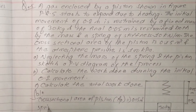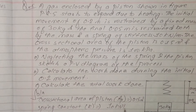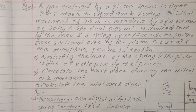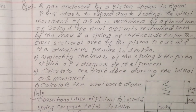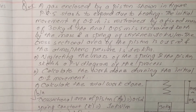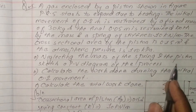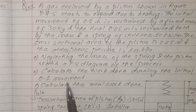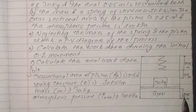Spring constant K = 10 kilo Newton per meter. Fixed mass m = 30 kg. Atmospheric pressure P_atm = 100 kilo Pascal. Neglecting the mass of the spring and piston, we need to draw the PV diagram and calculate the work done during the initial moment and subsequent processes.